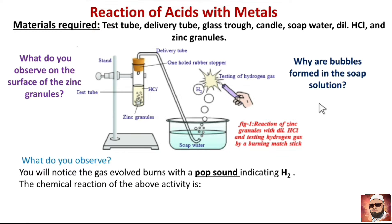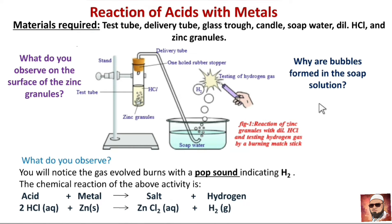The chemical reaction of our activity is: acid plus metal gives salt plus hydrogen. The acid we are using is hydrochloric acid and the metal is zinc. When they react, hydrogen gas is evolved and the salt that remains in the test tube is zinc chloride (ZnCl₂).